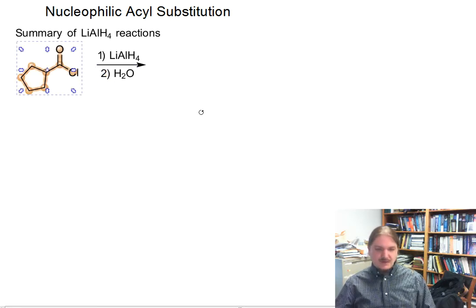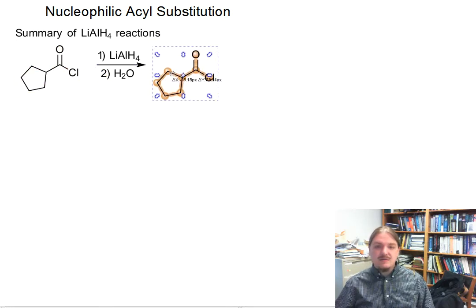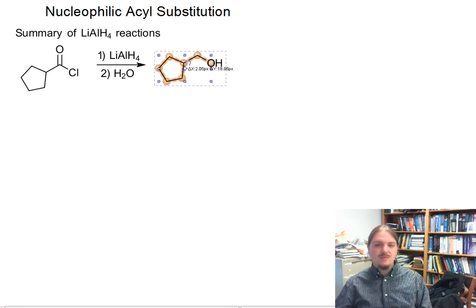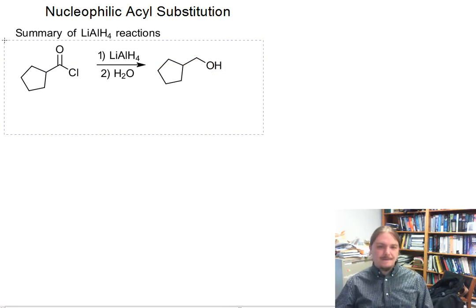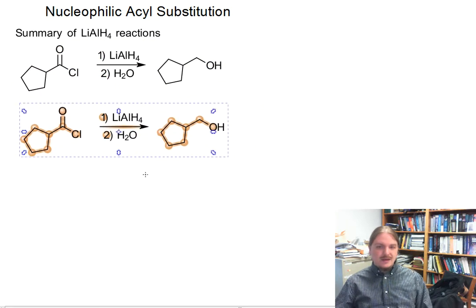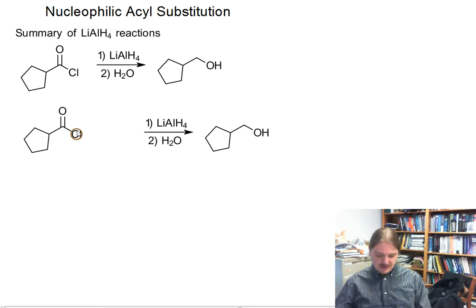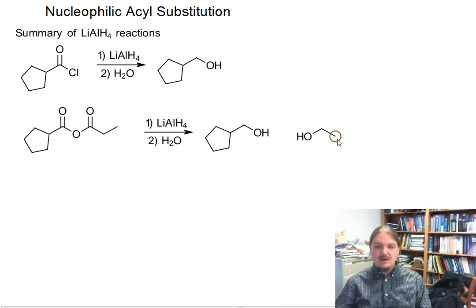Acid chlorides react with lithium aluminum hydride to form the primary alcohol, and anhydrides react with lithium aluminum hydride to form alcohols. Even mixed anhydrides react with lithium aluminum hydride and both alcohols that could form, form.